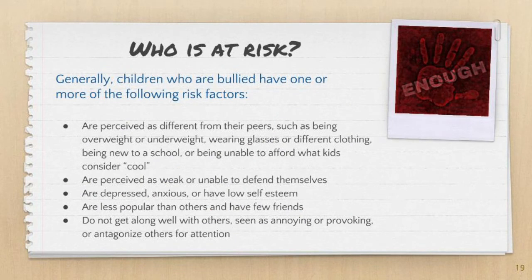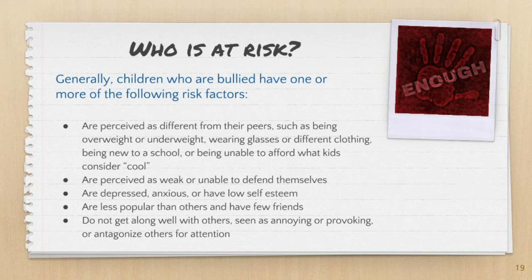Now we are going to talk about who is at risk for being targeted by bullies. Generally, children who are bullied have one or more of the following risk factors: they may be perceived as different from their peers, such as being overweight or underweight, wearing glasses or different types of clothing, being new to a school, or unable to afford what kids consider cool. They may be perceived as weak or unable to defend themselves and may not have a peer group to defend them. Children who are bullied may be depressed, anxious, or have low self-esteem. They may be less popular, have fewer friends, and may sometimes be seen as annoying, provoking, or antagonizing others for attention.